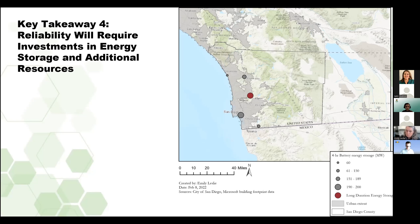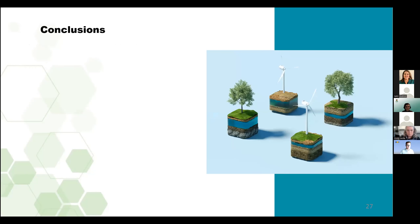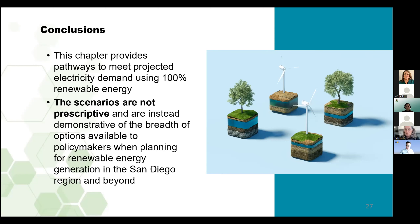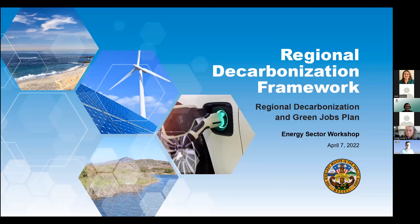Este mapa muestra la extensión urbana en gris claro, la energía hidroeléctrica bombeada en círculo rojo y el almacenamiento en batería en círculo gris oscuro, donde el tamaño indica la capacidad de almacenamiento en megavatios. En resumen, este capítulo ofrece vías para satisfacer la demanda de electricidad prevista utilizando energía 100% renovable, apoyando la descarbonización regional en otros sectores. Los escenarios creados para este capítulo no son prescriptivos, sino demostrativos de la amplitud de opciones disponibles para los responsables políticos. Hay un número casi infinito de escenarios posibles y estos son solo un puñado de ellos.